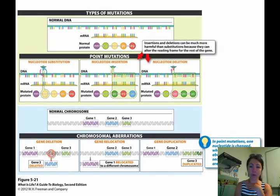And so in point mutations, one nucleotide is changed, wherein chromosomal aberrations, entire sections of the chromosome are altered.